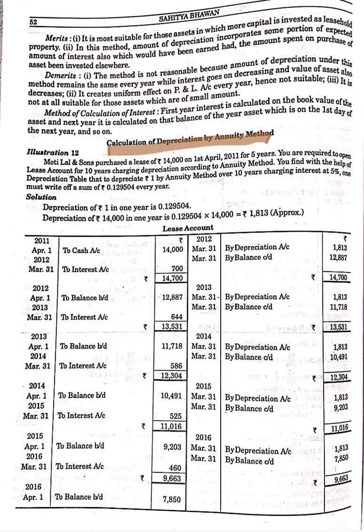Suppose a company invests some amount in an asset. It means they are not just investing the money, but also forgoing the interest they could have generated by investing that money somewhere else. So in this method, the rate of interest will be given, interest will be charged and written on the debit side on the last working day of the year, calculated on each year's opening balance.